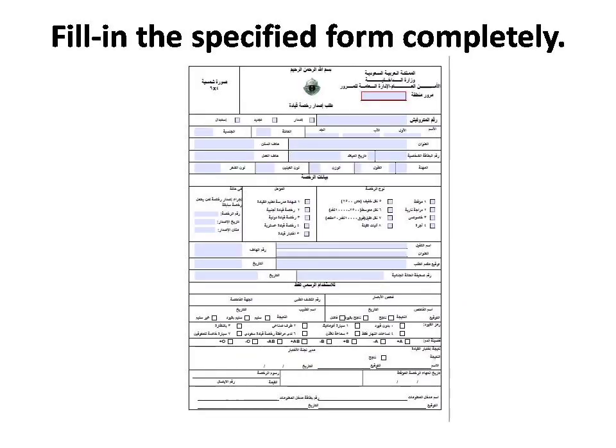The second thing is this form. This form should be filled and submitted in the office. As per the Murur, this form is in Arabic. It can be downloaded from the description link. If you don't want to fill this form yourself, there are agents available outside the driving school who will charge 10 to 15 riyals to help you fill it. In some driving schools they are not asking for this form and are just asking for the Absher appointment.